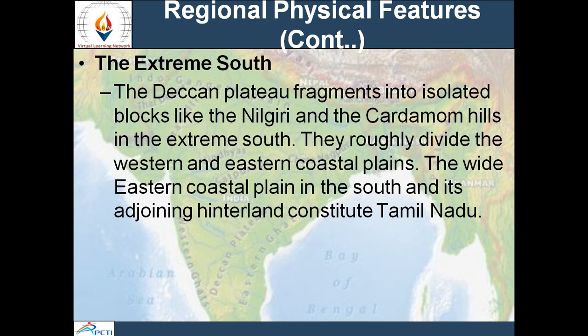Geographically, culturally, and linguistically, this region is highly evolved. The western coastal plains in the extreme south, known as Malabar — present-day Kerala — have produced rice, pepper, and spices since post-Mauryan times. Kerala, being open to the sea, saw first Christian and then Muslim influences arrive through maritime routes. The extreme south of India is so distinct from other parts because of its geographical location, its seasonal rivers, and its hardworking people.